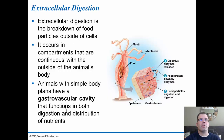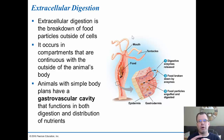Extracellular digestion occurs in compartments continuous with the outside of the animal's body. Even in simple animals like cnidarians, the gastrovascular cavity takes in food, releases enzymes to break it down, and then cells absorb the nutrients once they're broken down. Anything not digested is excreted back out through the mouth. Whether you're a large animal like a human or a small animal like a hydra, internal digestion occurs inside a tube or vessel that releases enzymes and eliminates waste.